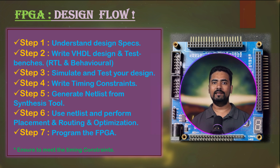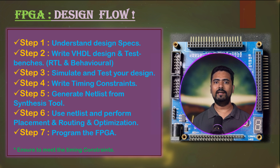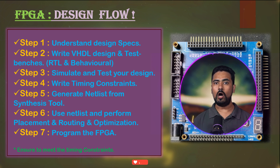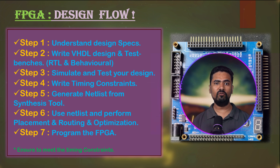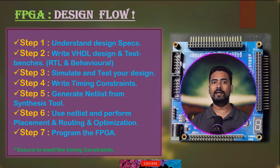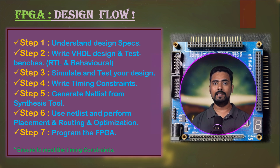This binary file is like the master plan that tells the FPGA how to perform its tasks. The implementation stage also provides valuable reports. Along with the binary file, the tool generates reports detailing resource usage — how many resources are still available and how many input/output pins are used. The most critical report is the timing report, which verifies if your design meets the speed requirements you specified in the timing constraints, ensuring your design functions correctly on the real FPGA hardware.